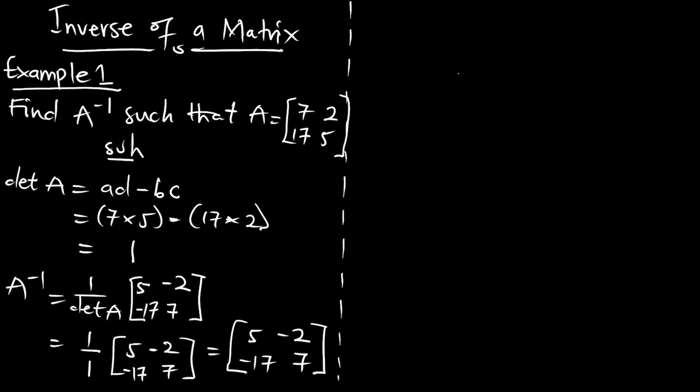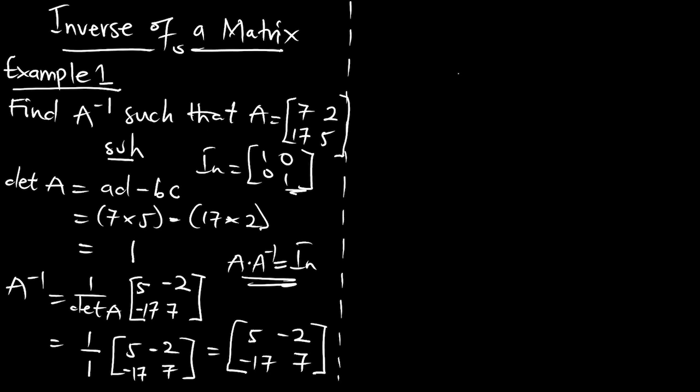In order to check if your inverse matrix is correct, anytime you multiply matrix A by its inverse, it should give you the identity matrix. So you can multiply the inverse matrix by the original matrix and get the identity matrix. We know the identity matrix for a 2 by 2 is [1, 0; 0, 1]. You can test for that.